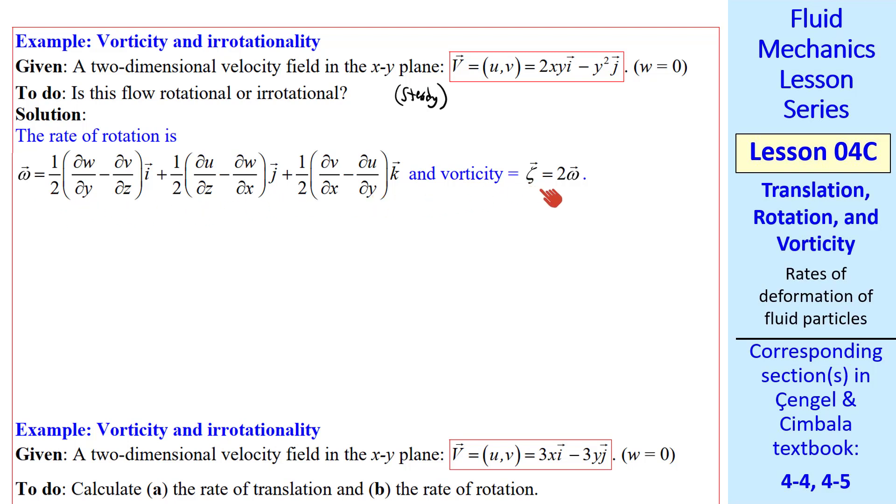Well, we can either calculate omega or zeta. They differ by just a factor of two. Here's the equation for omega in Cartesian coordinates. Since W is zero, this term is zero. By the way, when I cross things out, I like to put the reason I cross it out in parentheses below. I strongly encourage you to get into this habit. It justifies why we're setting this term to zero. Later on, when you look at your notes, it will help you remember why you crossed out certain terms. Since it's 2D, V is not a function of Z, so that term goes away as well. Same thing here and here, but we do need to analyze these terms.